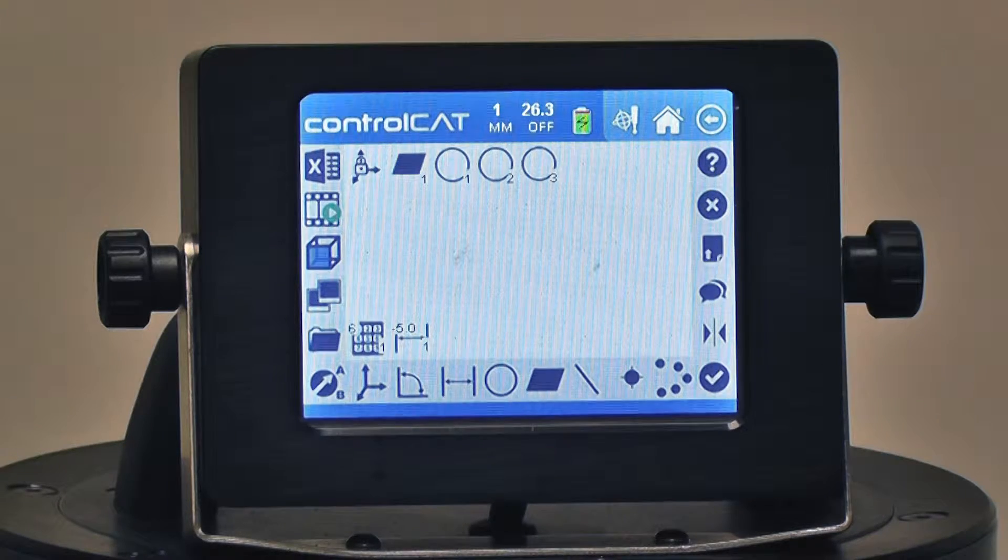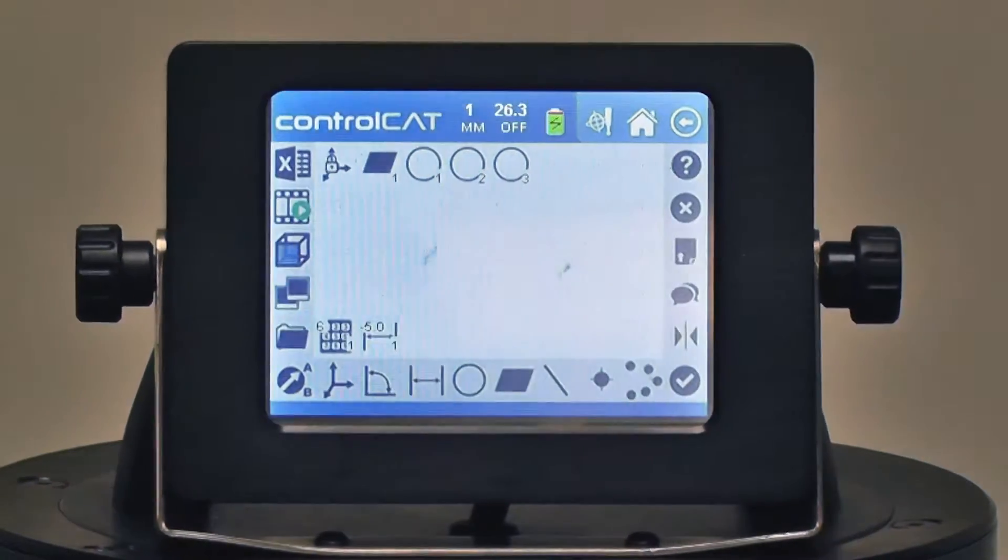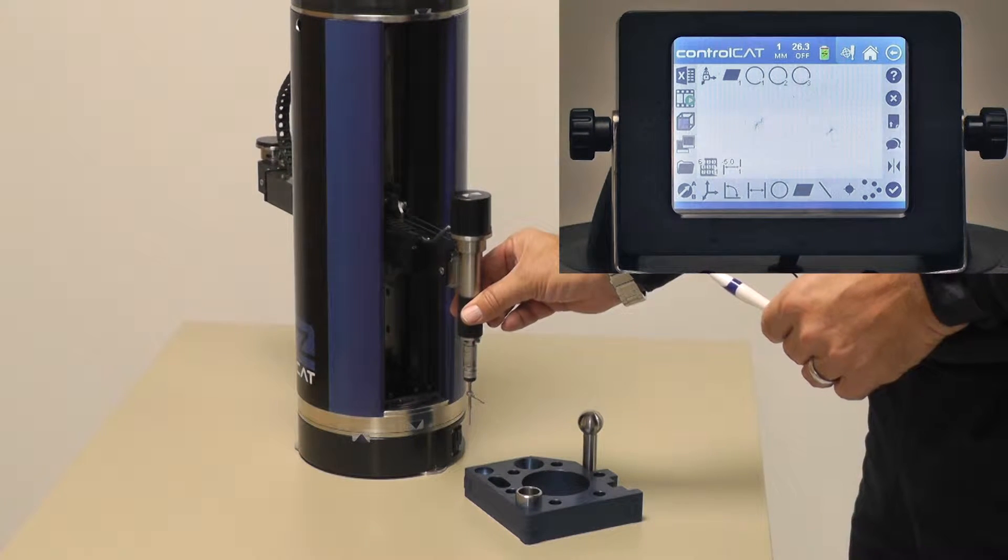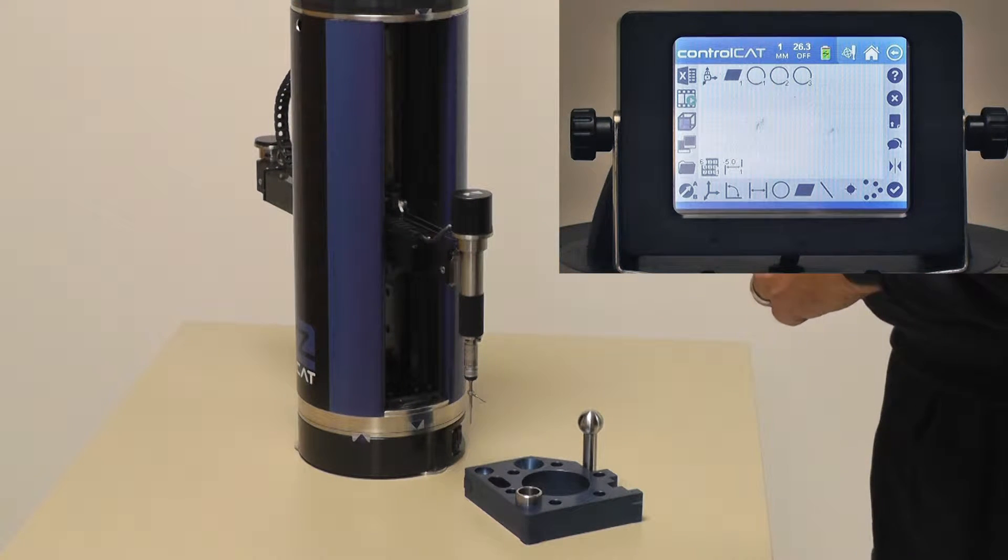Okay, now we're going to measure an angle using the Z-CAT. And again, every time I do a measurement, I try and position the probe into a starting point and give it a go-to there.